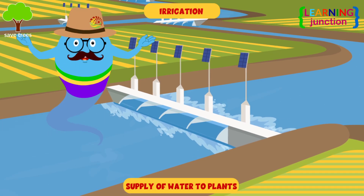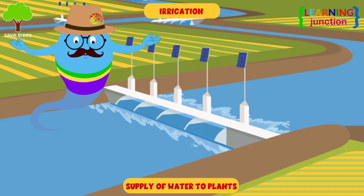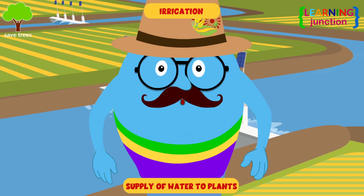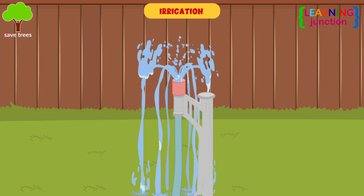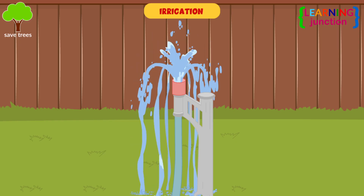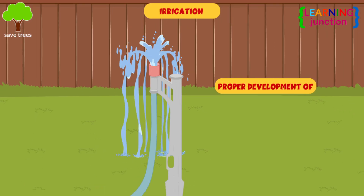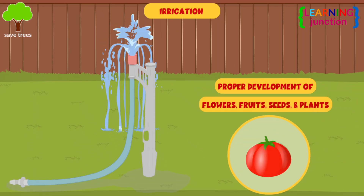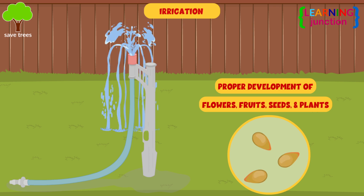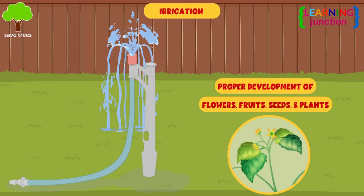Step 4: Irrigation. The supply of water to the plants is called irrigation. Water helps in the proper development of flowers, fruits, seeds, and plants.